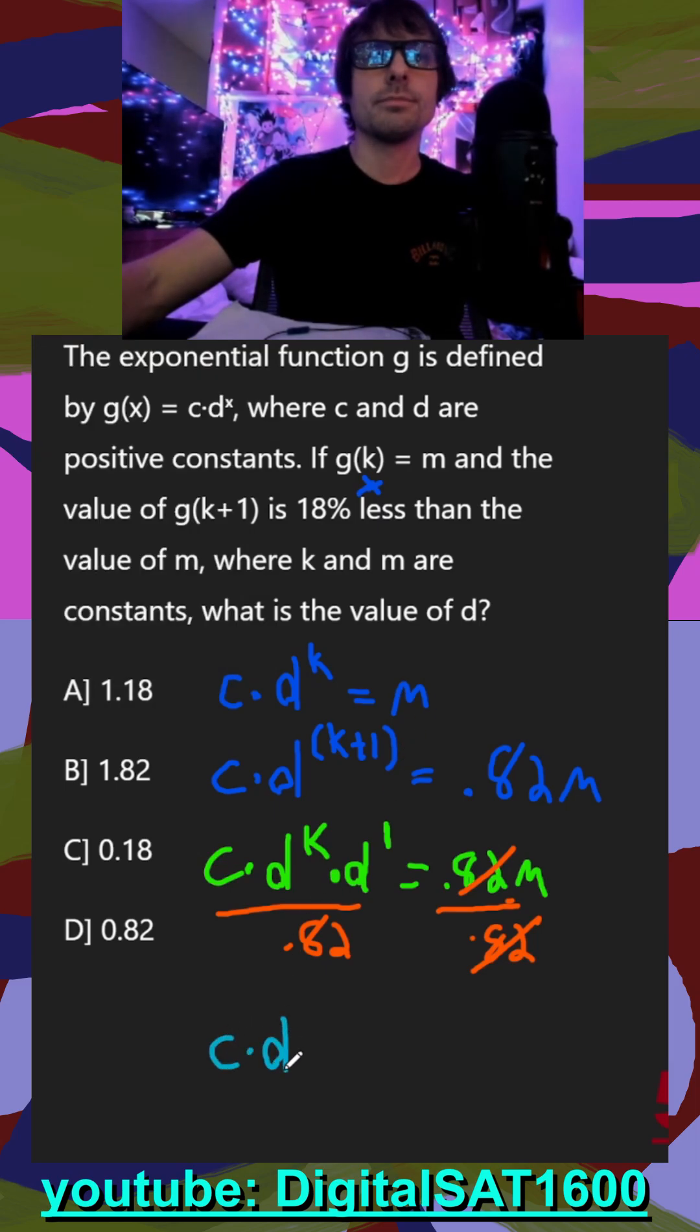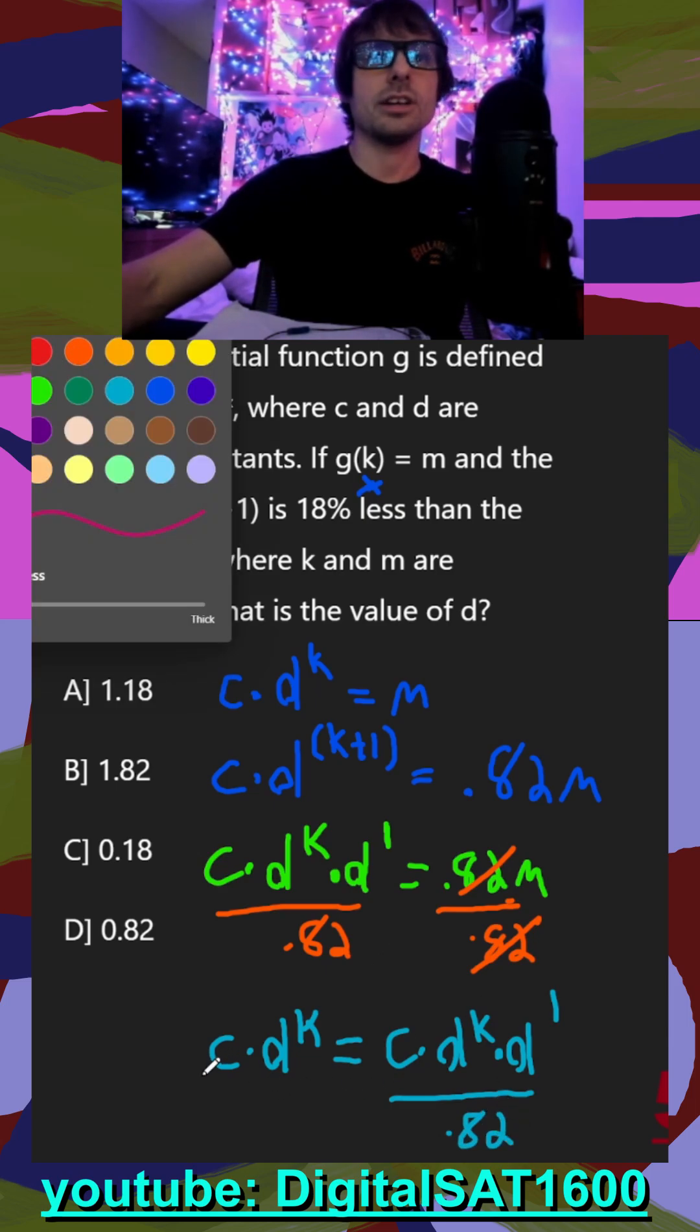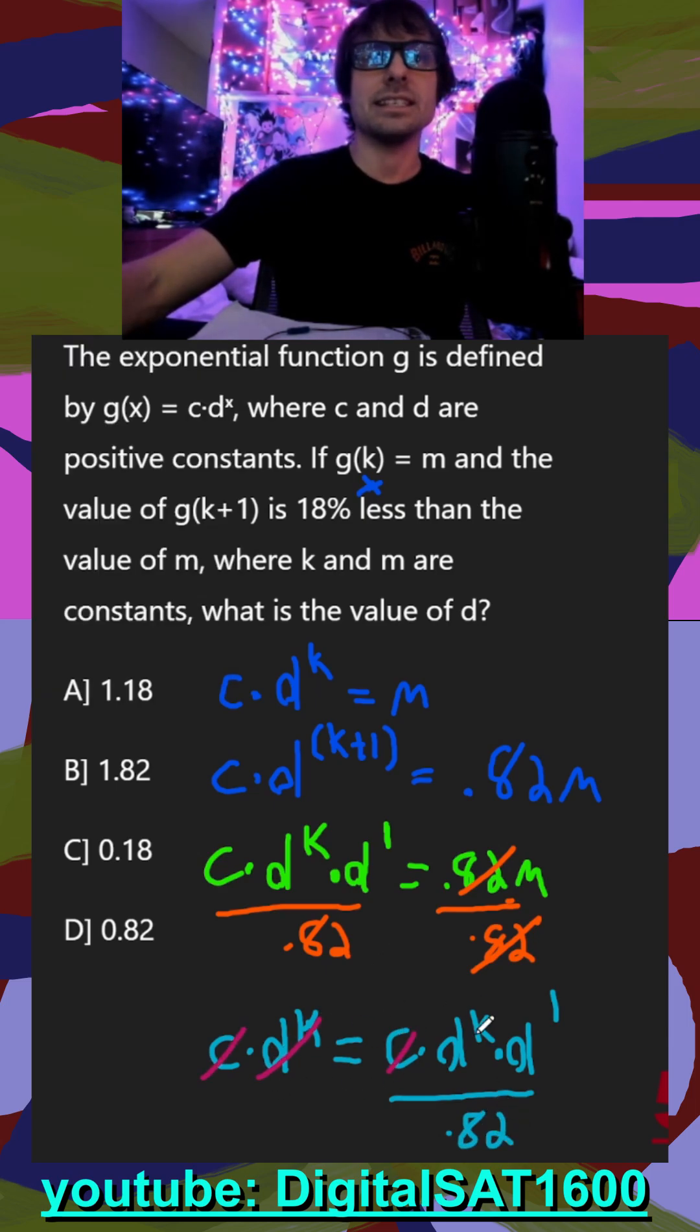So I write my top equation to the k, that's going to be equal to c times d to the k, times d to the first, over 0.82. And our goal was realized, because now we can cross off the c's on both sides, the d to the k's on both sides, there's that one there.